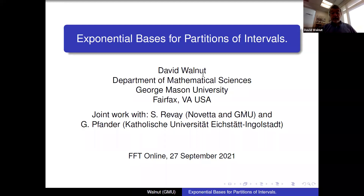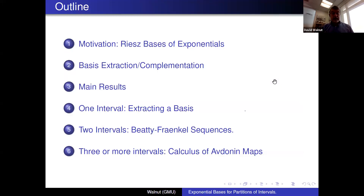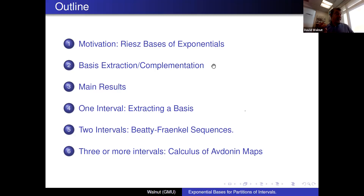Here's the outline for my talk. The talk is about Riesz spaces of exponentials. I'll start with some general remarks about Riesz spaces of exponentials and state some of the problems there. Then I want to talk about something called basis extraction and complementation, which forms the context of these results. Then I'll go over the main results and the proof, which we think is fairly interesting because it brings together concepts from different areas of mathematics.